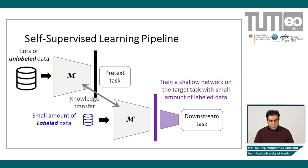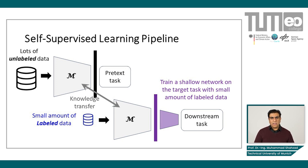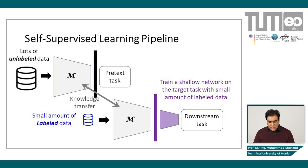Graphically, this looks like the following. After the pretext training, we have a pre-trained model M, and we do this knowledge transfer. We take some small amount of labeled data and use M to extract the features, and then append a shallow network — a very small shallow network, maybe a linear classifier — for a particular downstream application.